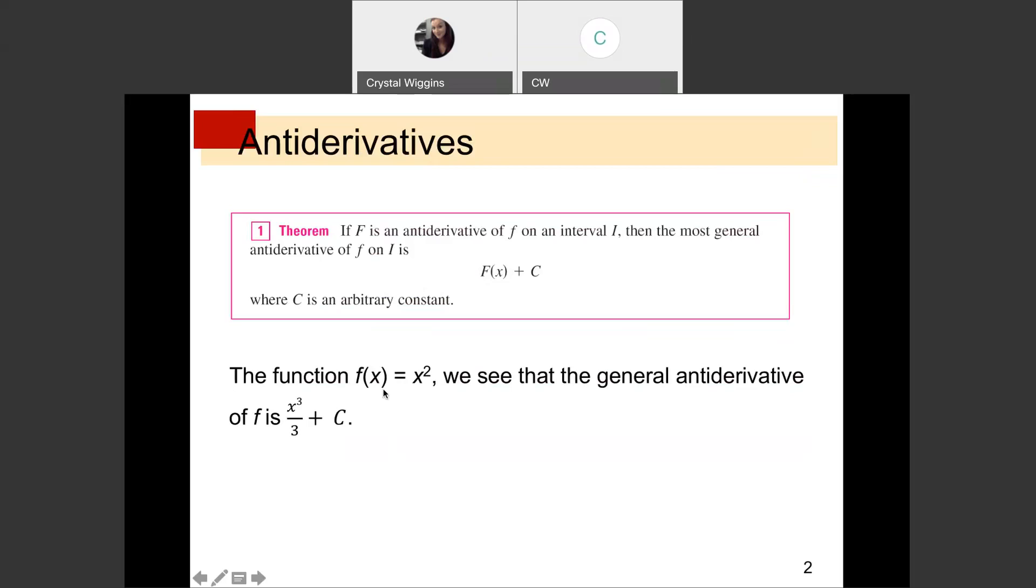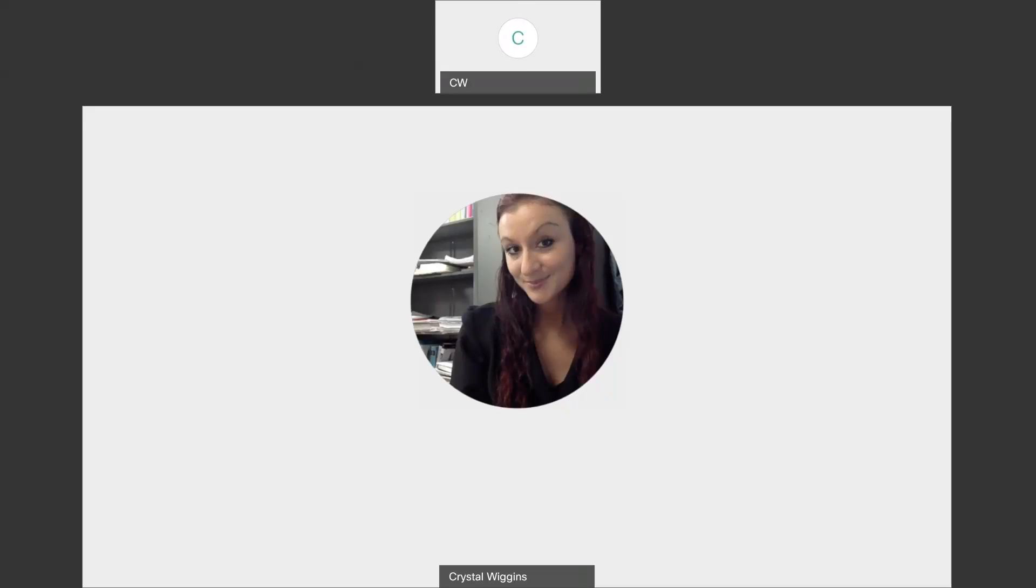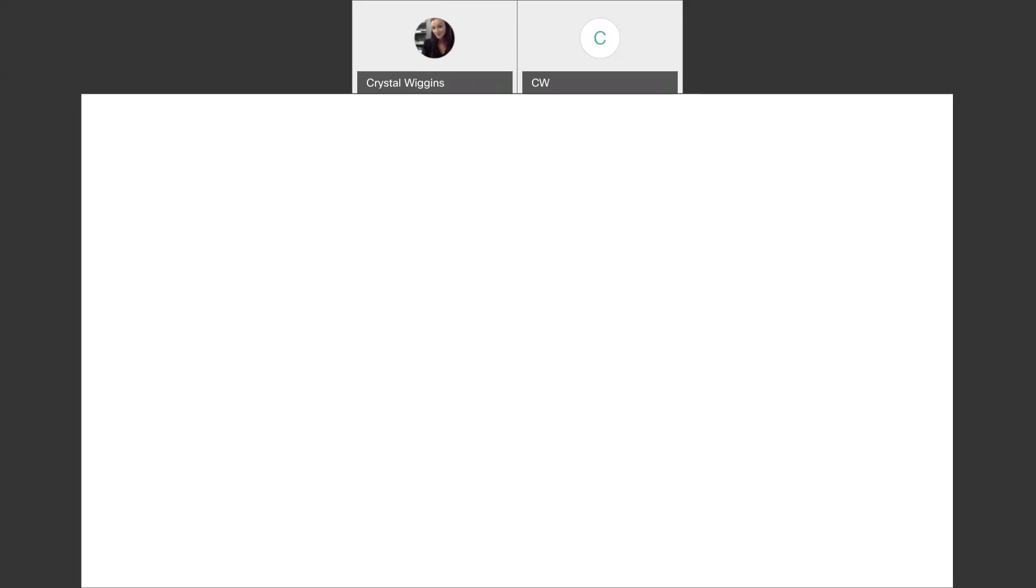The function x squared, we see that the general antiderivative is as follows. Let me show you how it works. We're saying that the function is x cubed over 3. When we went to take the derivative of this function, we rewrite this first. This function is 1 third x cubed, making it easier for us to see that we take the 3, we multiply it down here. That cancels to a 1. Come back up and subtract 1. So the derivative is x squared.